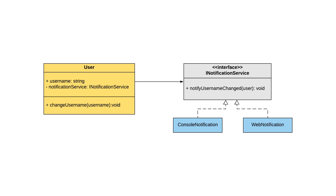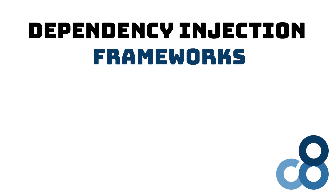This example is very simple and we only have a single consumer of the notification service. In bigger applications, there could be many consumers — even hundreds or more. The more classes you have in your program, the more complex it becomes. You have to define the implementation for every abstraction in your application. This can become a huge mess. This is where dependency injection frameworks come into play.